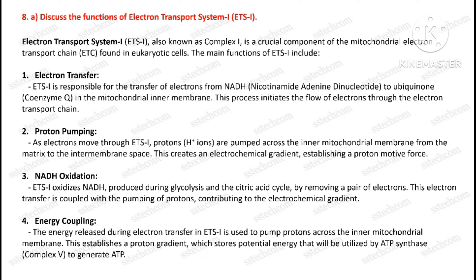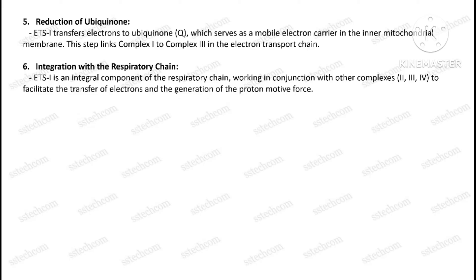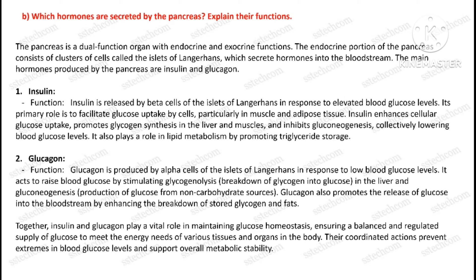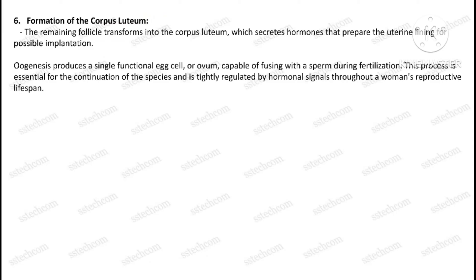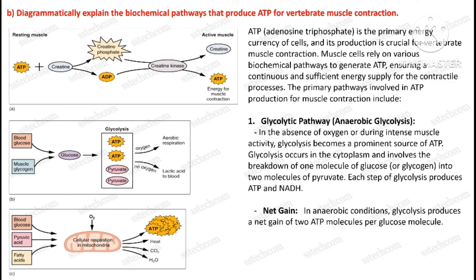Second part of question eight: which hormones are secreted by the pancreas — explain their functions. Question number nine, first part: explain oogenesis in human females. Second part: diagrammatically explain the biochemical pathway that produces ATP for vertebrate muscle contraction.